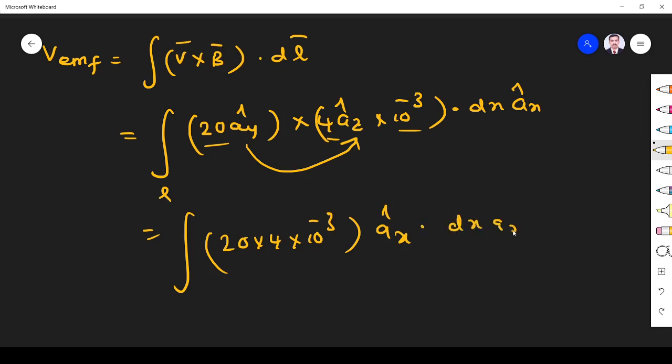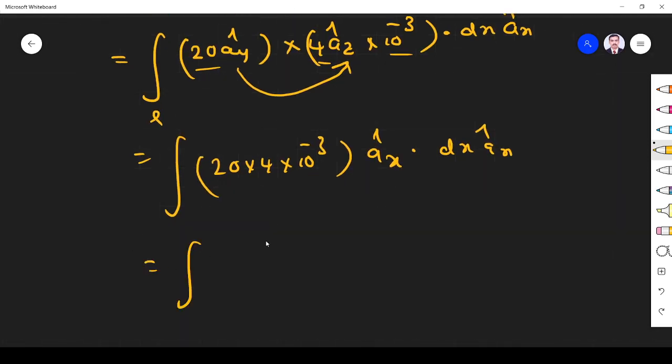If you simplify it, what you will get is 80 times 10^-3. ax dot ax is 1, so dx. Now we have to find the length. The length varies from x equals 0 to L. Now if you simplify that, what you will get is 4.8 millivolts.